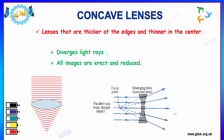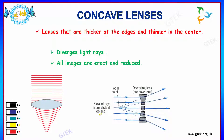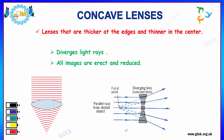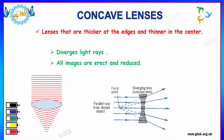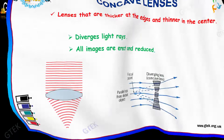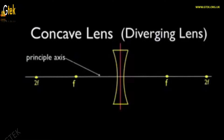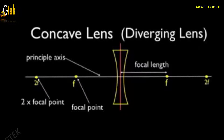You can see here how parallel rays from a distant object are passed on through the concave lens — that is, the diverging lens. The concave lens acts upon the rays, and we have a focal point f, where 2f is two times the focal point, and the principal axis is in the middle.